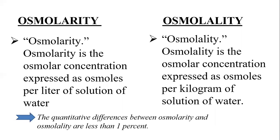There are two different terminologies: osmolarity and osmolality. Osmolarity is the osmolar concentration expressed as osmoles per liter of solution of water, whereas osmolality is the osmolar concentration expressed as osmoles per kilogram of solution of water. The quantitative difference between osmolarity and osmolality is less than one percent, and mainly osmolarity is used in physiology.